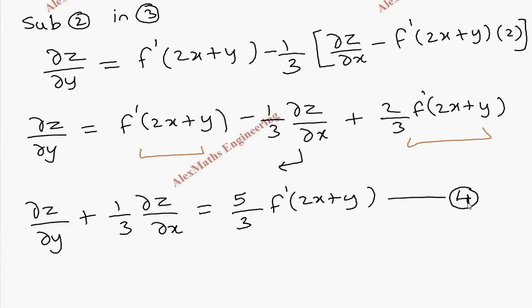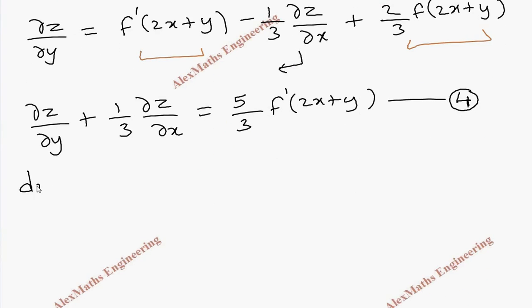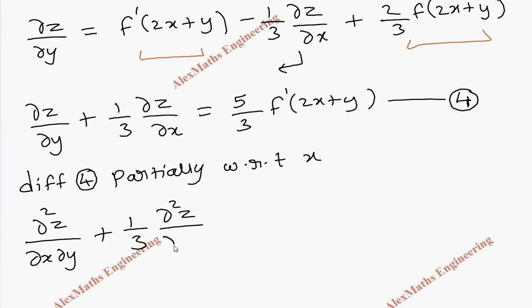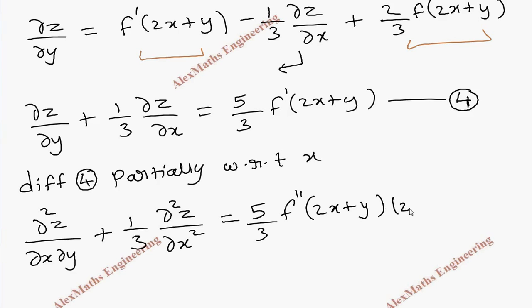Now we take the fourth expression and differentiate it partially with respect to x. This becomes ∂²z/∂x∂y plus 1 by 3 · ∂²z/∂x² equal to 5 by 3 · f′(2x + y) · 2. Let's keep this as the fifth expression.